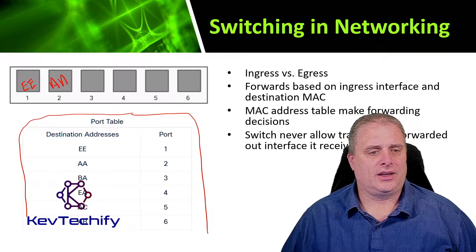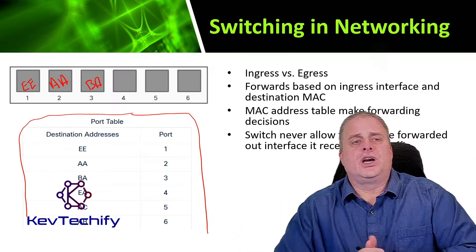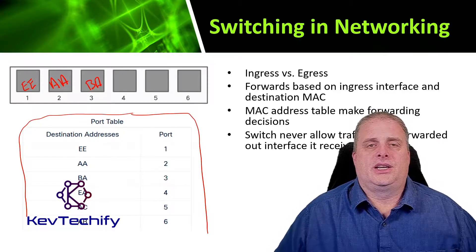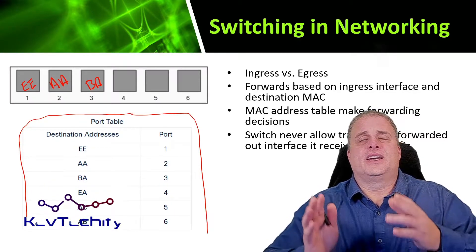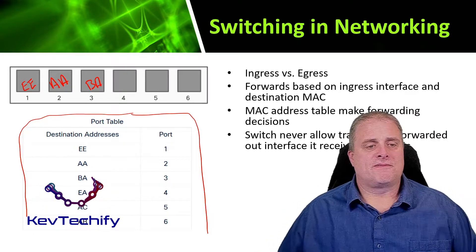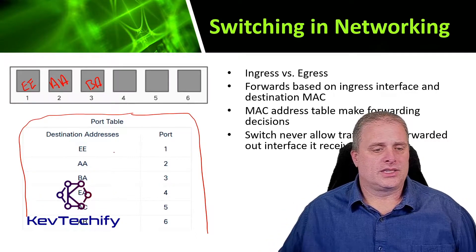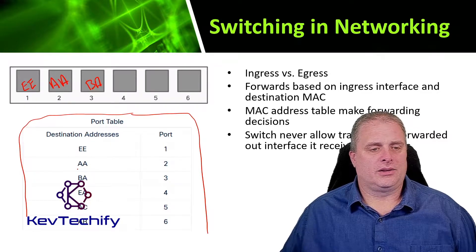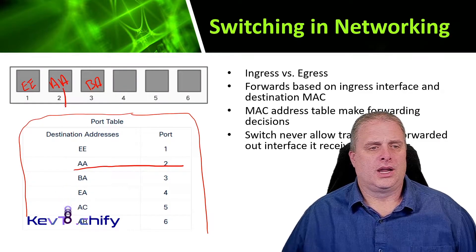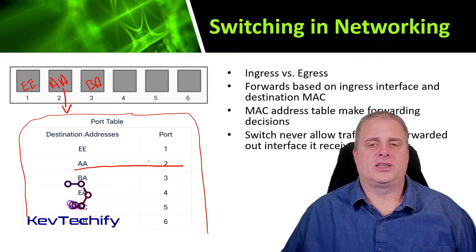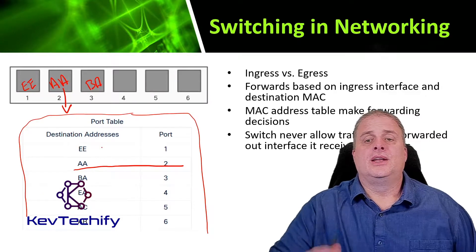Then we have AA, BA, and so on and so forth. What the switch does is it looks at the data coming in, then looks to see what the destination MAC address is. It finds it in its port address table. Let's say we have a frame destined for the device with the MAC address of AA — we send it out of port two. It came in on a different port and goes out on port two based upon our MAC address table.